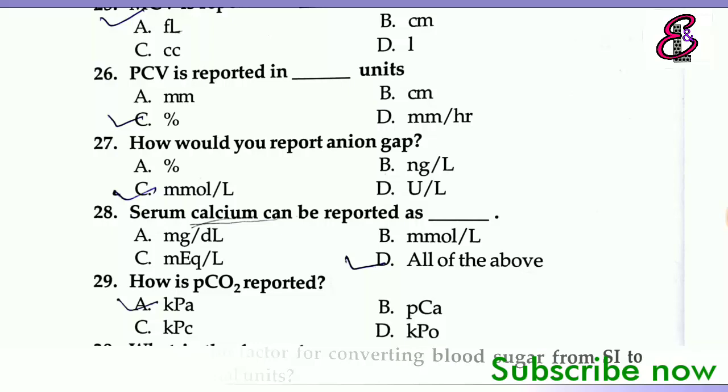Next question: How would you report anion gap? Answer is mmol per liter, mmol per liter.